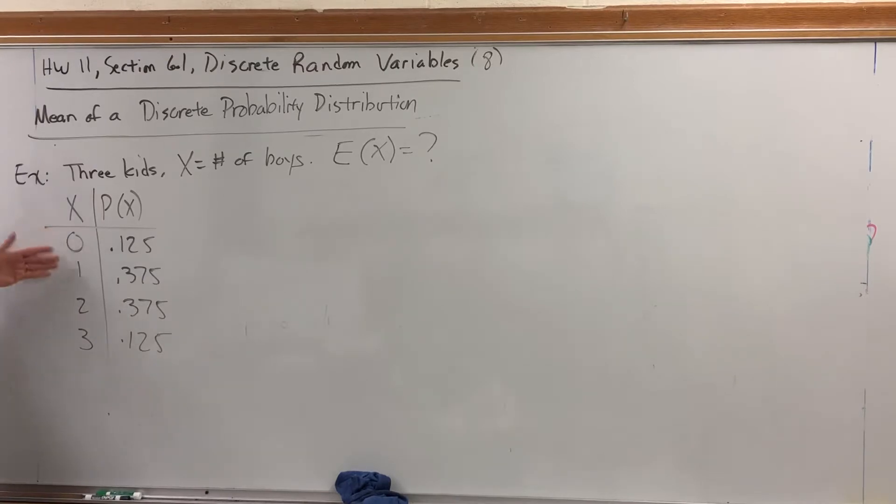X can be 0, 1, 2, or 3, that's how many boys they can have, and assuming that having a boy and a girl are equally likely, there's the probabilities of having this number of boys.